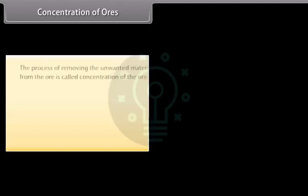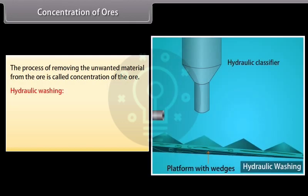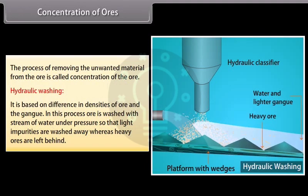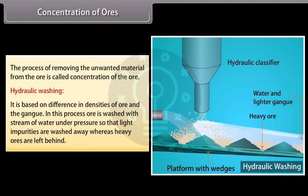Concentration of ores. The process of removing the unwanted material from the ore is called concentration of the ore. The important methods for concentration of the ore are: Hydraulic washing. It is based on difference in densities of ore and the gang. In this process, ore is washed with stream of water under pressure so that light impurities are washed away whereas heavy ores are left behind.